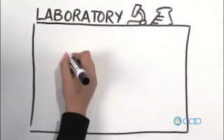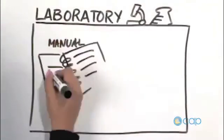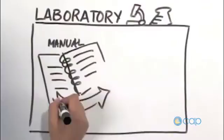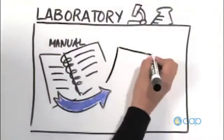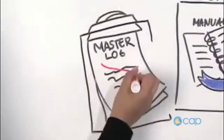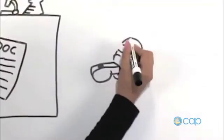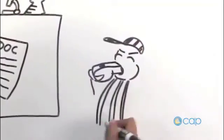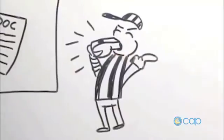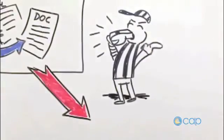Documents occasionally become obsolete. In this case, management removes the document from the laboratory manual and strikes it from the master document log. All copies of the document are taken out of the laboratory and the document is placed in archive files.